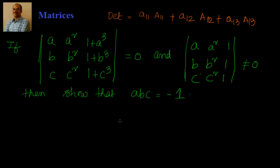We have been given that if the determinant of the matrix with entries (A, A², 1), (B, B², 1), (C, C², 1) is not equal to 0, and another determinant is equal to 0, we have to show that ABC equals minus 1.